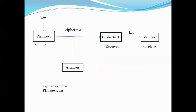As an example, suppose the ciphertext is 'FDW' and the plaintext is 'CAT'. This uses the Caesar cipher with a shift of three. The plaintext 'CAT' is encrypted to ciphertext 'FDW', which travels through the insecure channel where an attacker can obtain it.